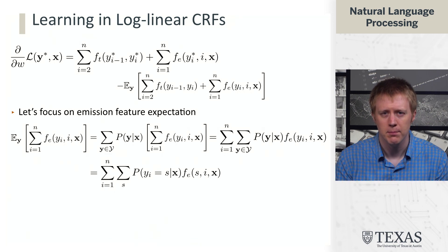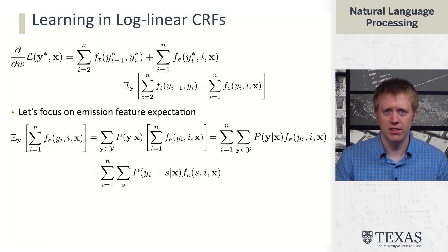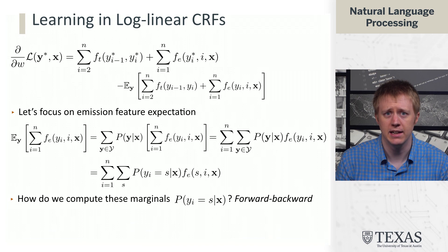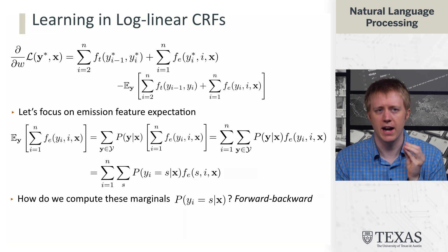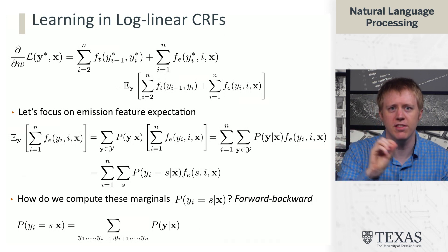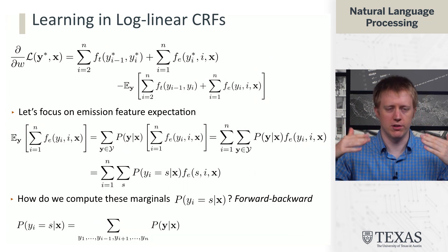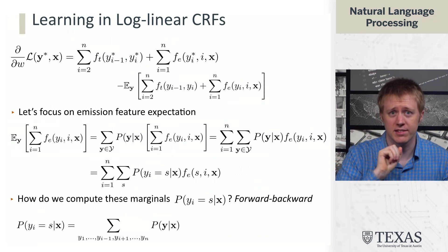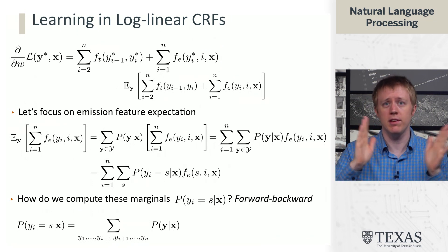And now the key thing is that this inner sum over y actually doesn't need to think about all the possible y's because the emission features only depend on a single y. It only depends on yi. So we can express this in terms of this marginal distribution, p of yi equals s. So s here, it represents a particular state. And what we need to say is, what is the posterior probability of yi equals s conditioned on x? And concretely what that means is that we've taken all the other y's, everything but this yi, and we've summed them out. We've said, forget about all the other ones. All I want to know is what is the probability that this time step has the value s?